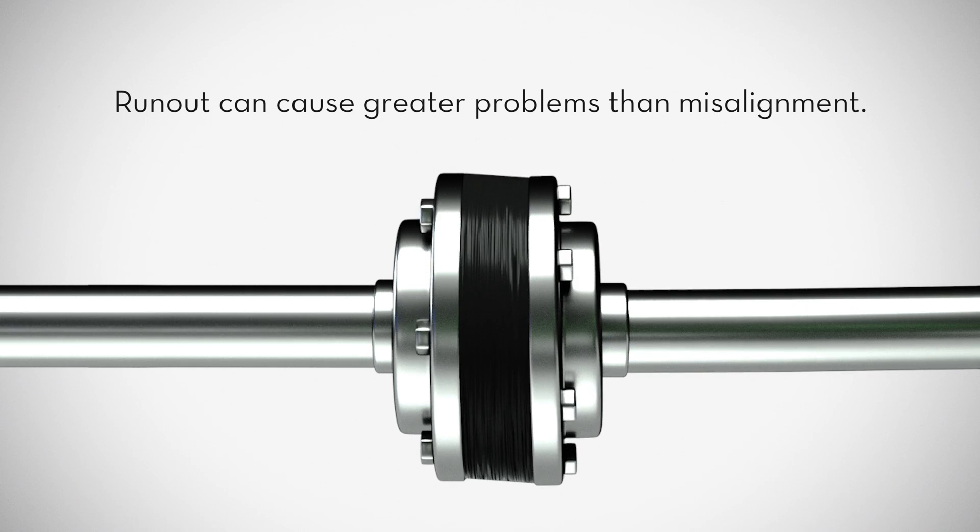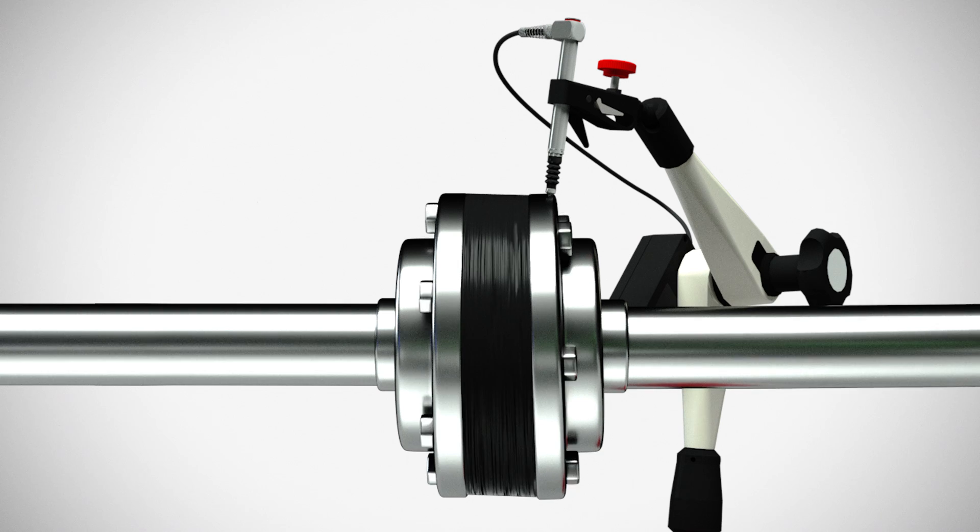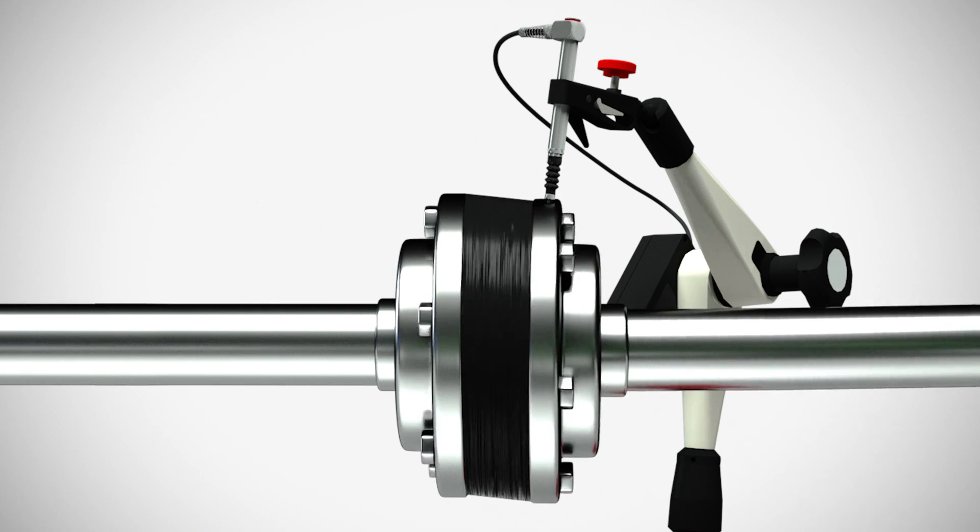Runout can cause even greater problems for rotating machinery than misalignment. This is why it is critical to use a tool like the probe before aligning a machine.